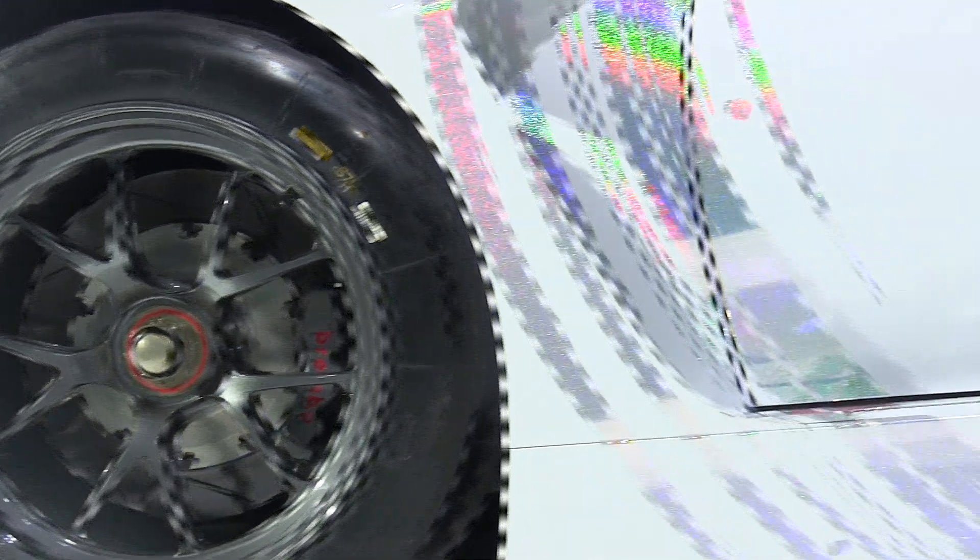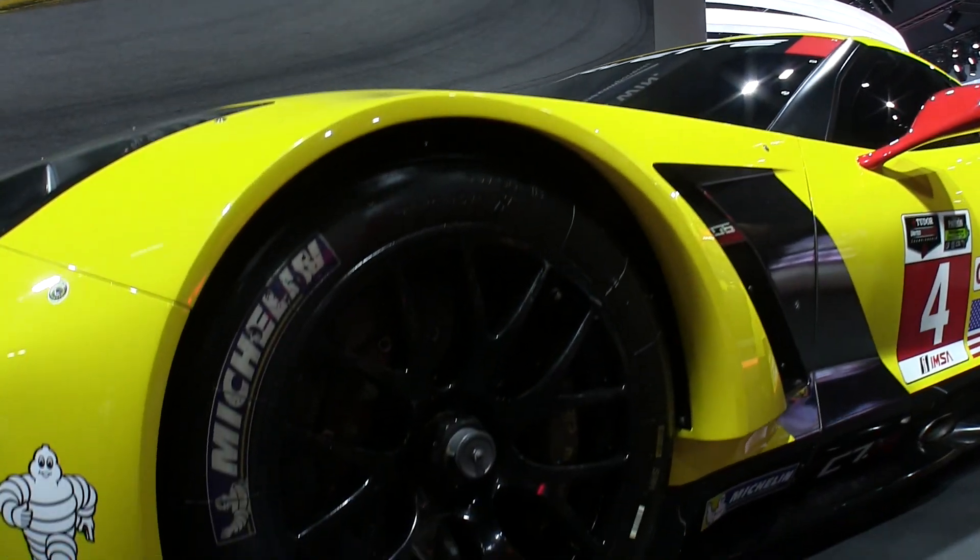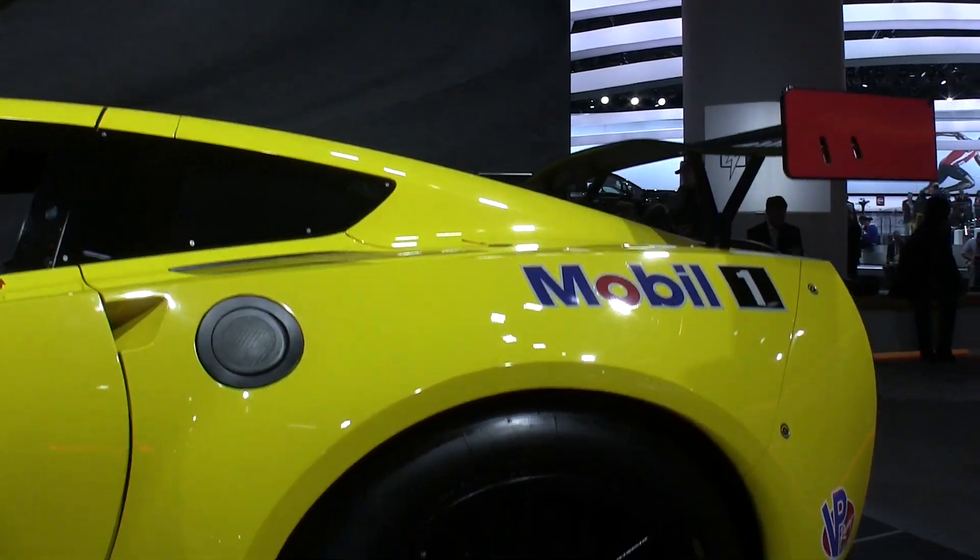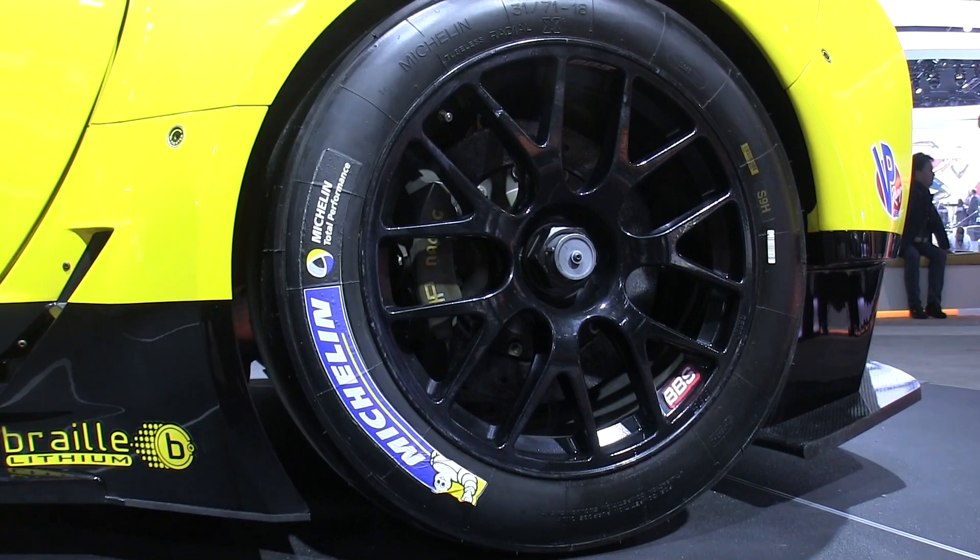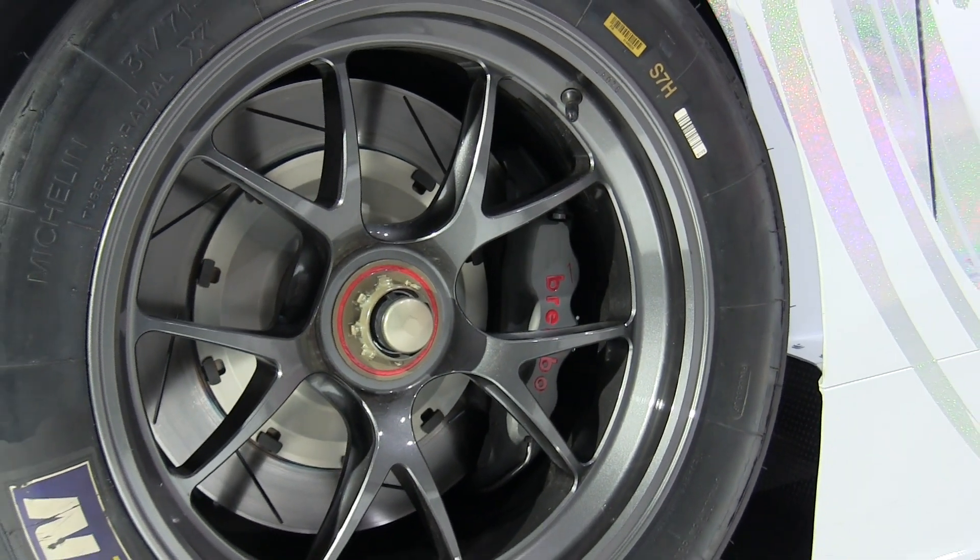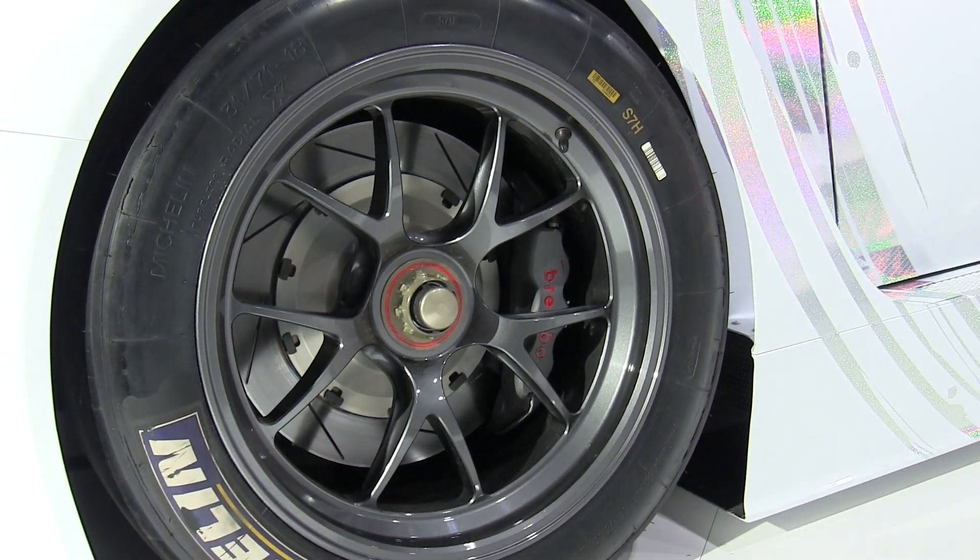And then also looking at some of the GT3 cars, for example, the Lexus RCF GT3 and the Corvette C7 GT3, both of these having the brake calipers towards the inside of the vehicle and then kind of down low as well. So they kind of put the weight towards the center and then tried to lower it a bit, kind of keep the weight low and in the center, which is ideal from a weight distribution point of view.